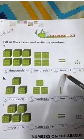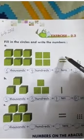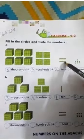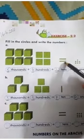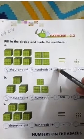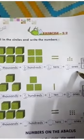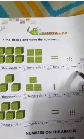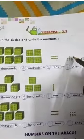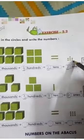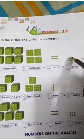With 10s there are 2 figures, so you will write 2. And with 1s there are 7 circles.